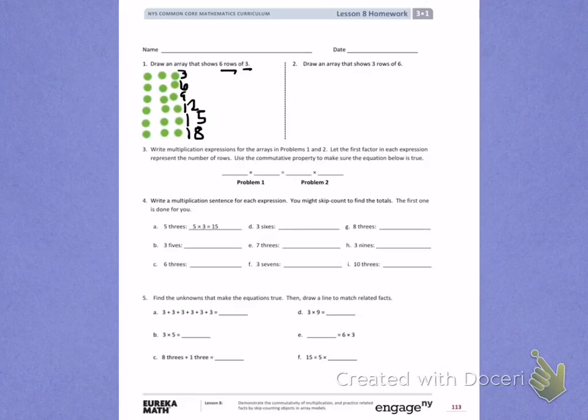Number 2. Draw an array that shows 3 rows of 6. So now you draw an array that has 3 rows with 6 in each row. After you draw the array, label your rows.